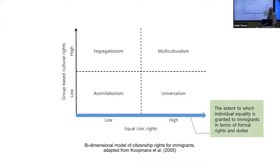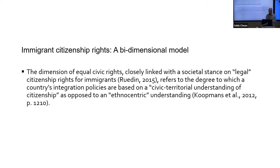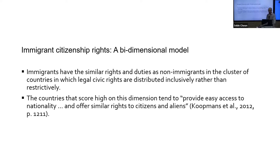The equal civic rights dimension differentiates countries in terms of the extent to which individual equality is granted to immigrants in terms of formal rights and duties. This dimension is closely linked with the societal stance on legal citizenship rights — it refers to the degree to which integration policies are based on a civic territorial understanding of citizenship as opposed to an ethnocentric understanding. Countries that score high on this dimension tend to provide easy access to nationality and similar rights to citizens and resident aliens.